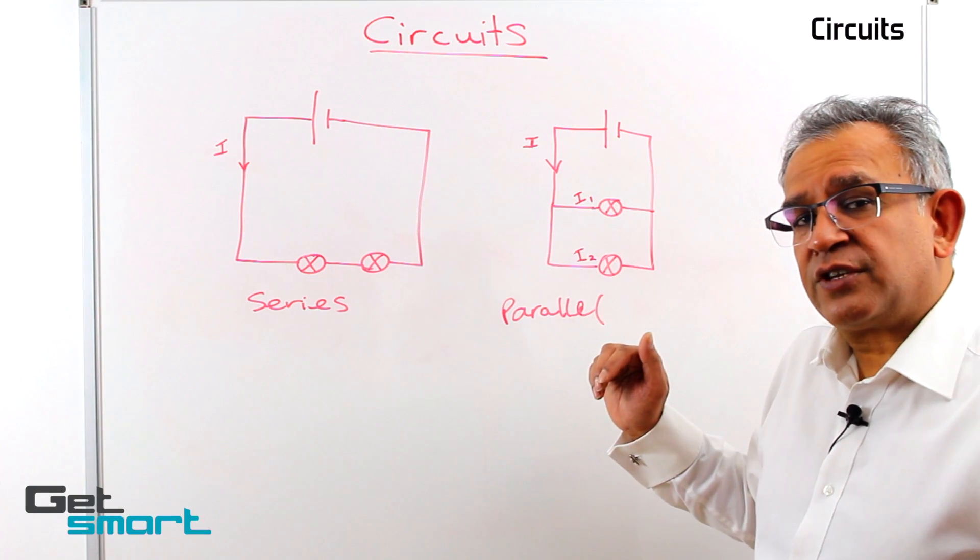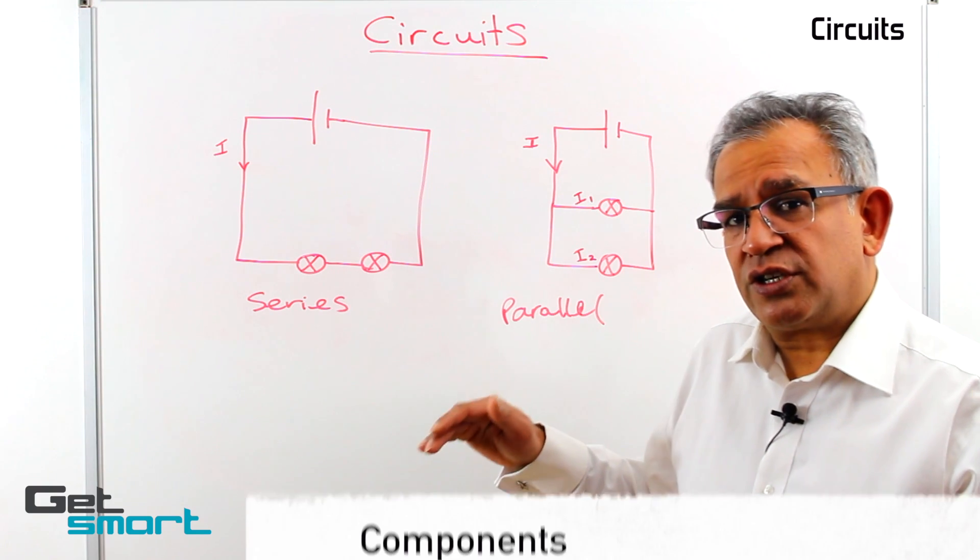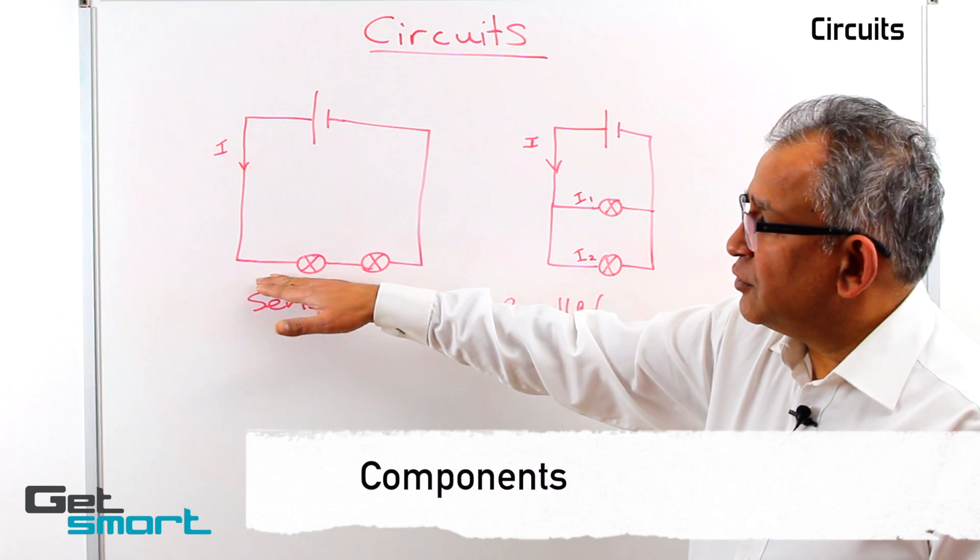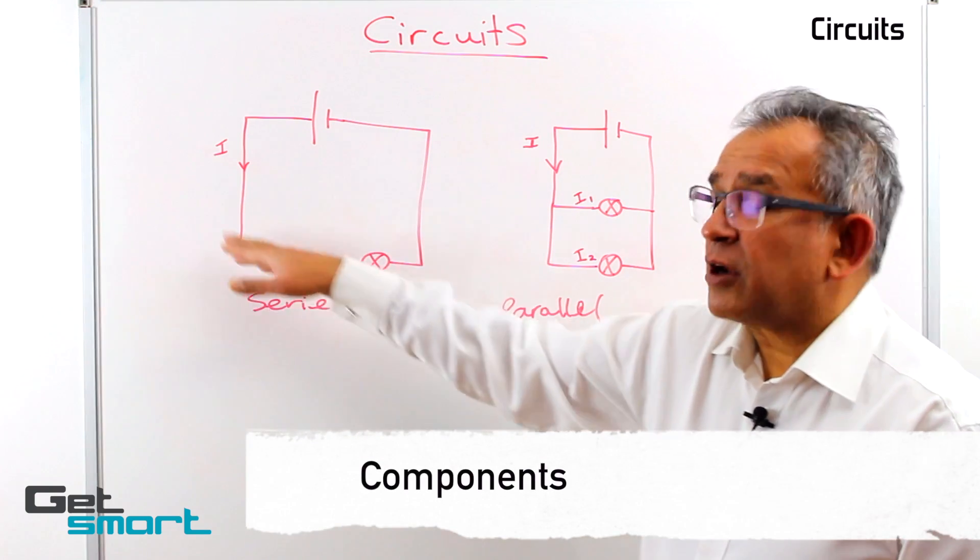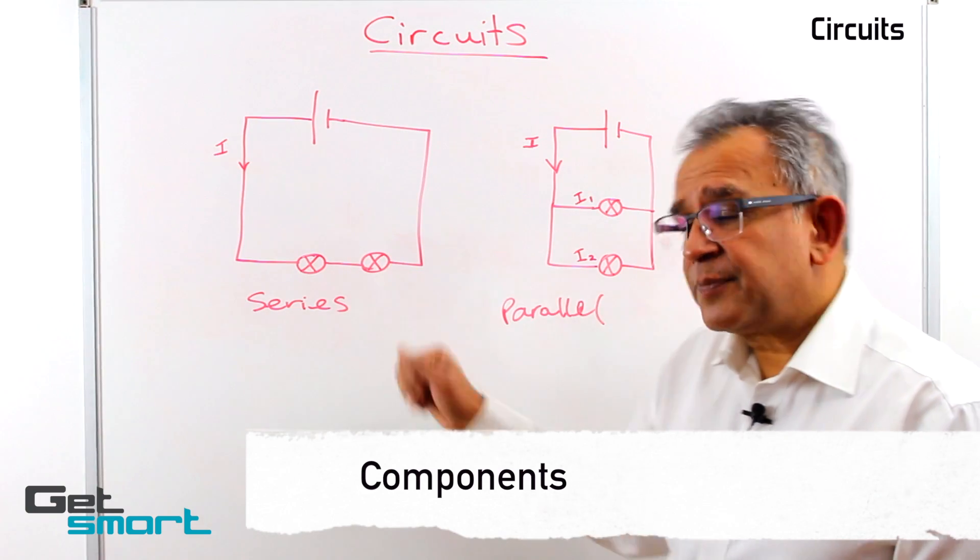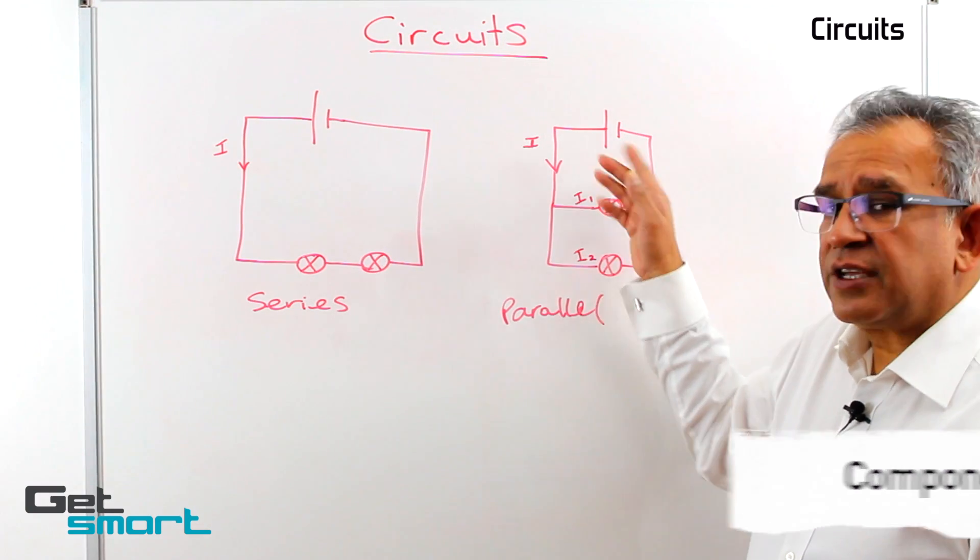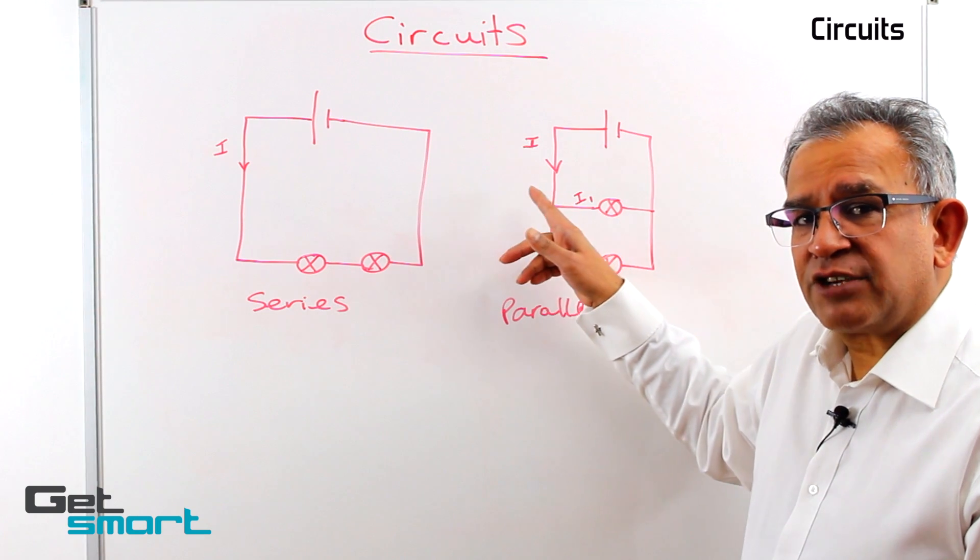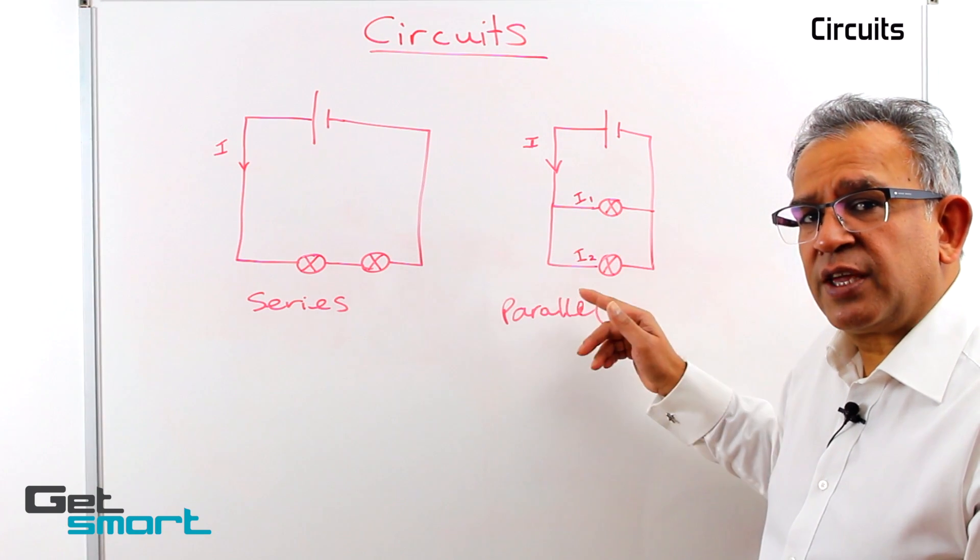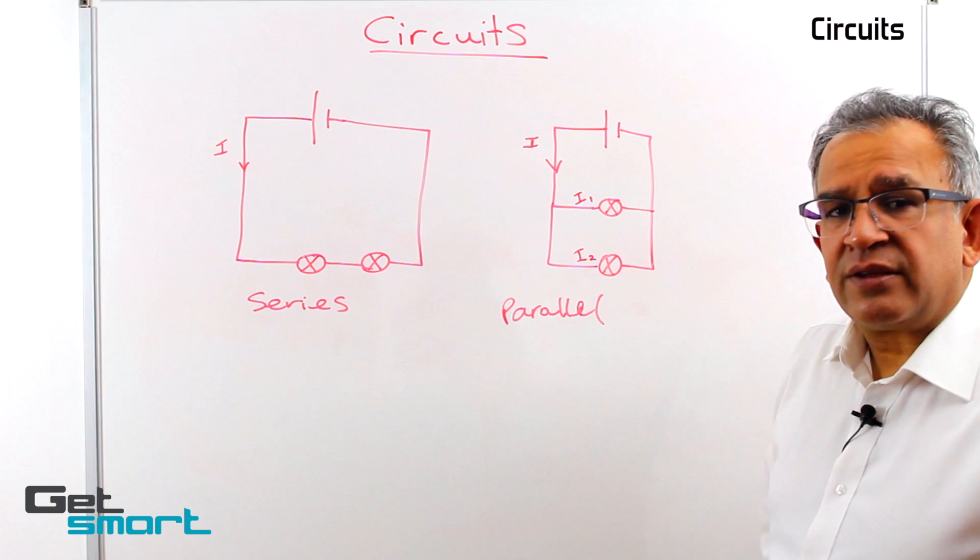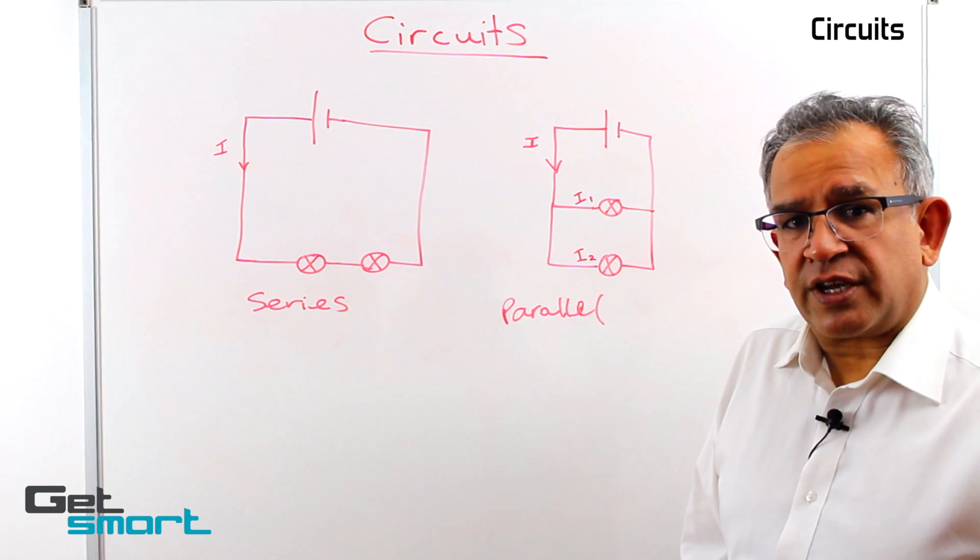So the main difference in the way that the circuits are structured is that the two components are in the same part of the circuit in a series circuit, and in a parallel circuit the components are arranged so that the electricity can pass through them individually and then combine again in the other side of the circuit.